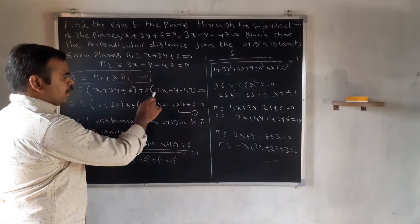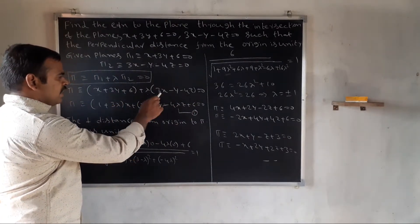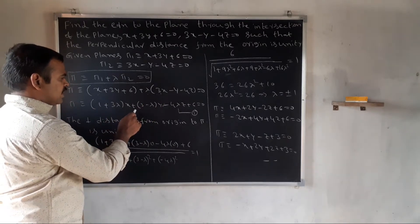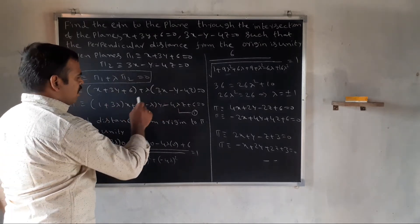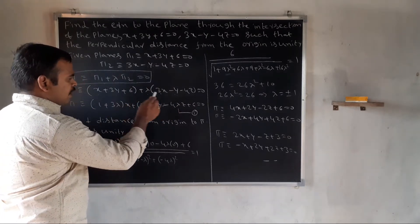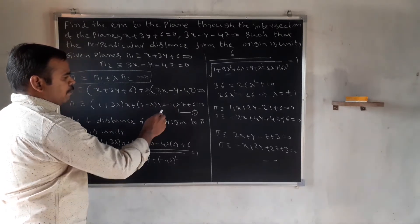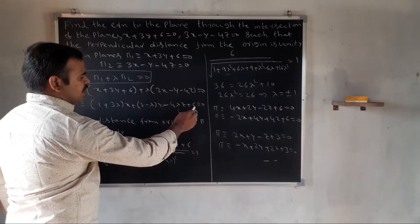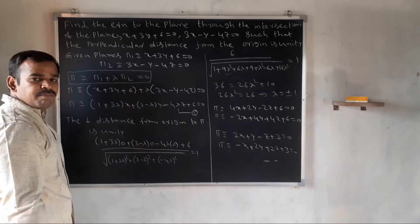Expanding: 1 plus 3 lambda into x, plus 3 minus lambda into y, minus 4 lambda z, plus 6 equal to 0. This is equation 1.